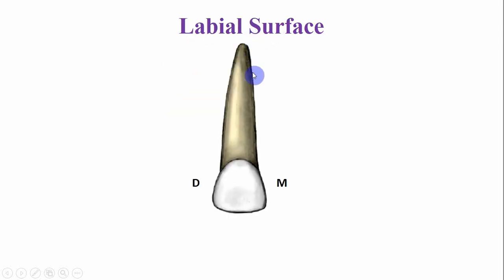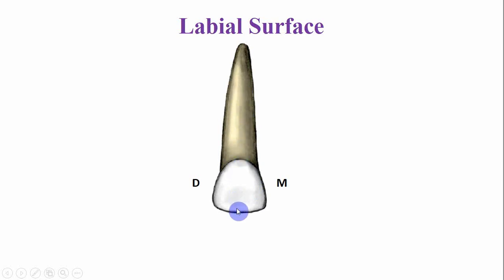This is the labial aspect of the deciduous lateral incisor. From the labial aspect, this tooth is smaller in all dimensions if you compare it with the central incisor. The tooth is longer cervico-incisally as compared to its mesiodistal dimensions.